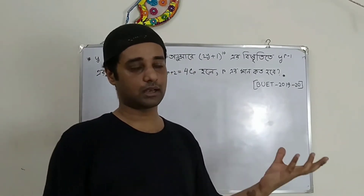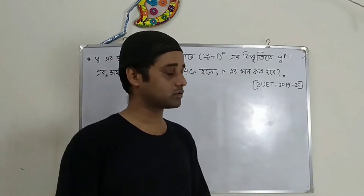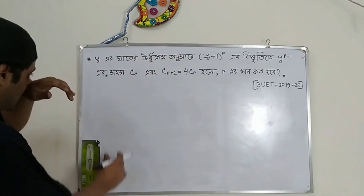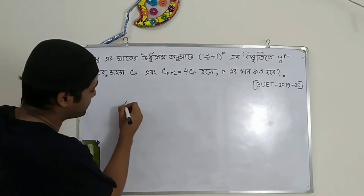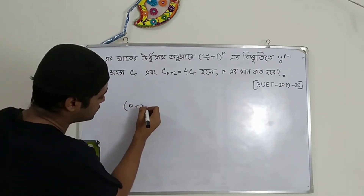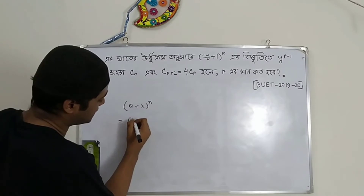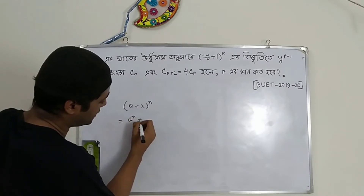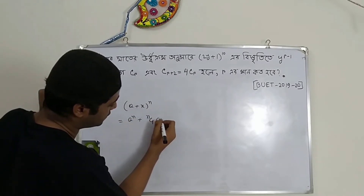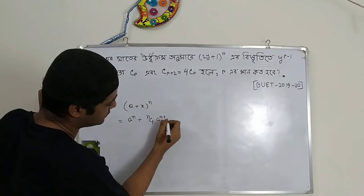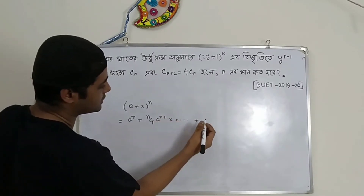I'm going to talk to you about binomial. We are going to talk about (a + x) to the power n. We can write this as: a to the n, plus nC1 times a to the (n minus 1) times x.